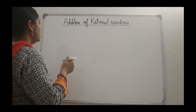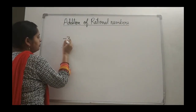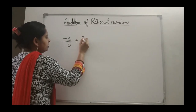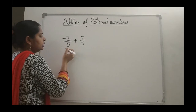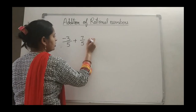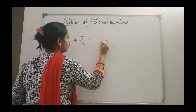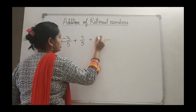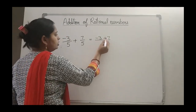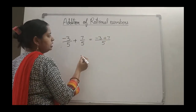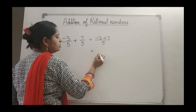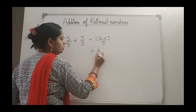See how. If you are getting a number like minus 3 upon 5 plus 7 upon 5. In fractions, what we are doing? We are having the common denominator. So we are taking the denominator as common and adding the numerators. But here in the numerator what we are having? We are having integers. Minus 3 plus 7 will give you 4. So 4 upon 5.